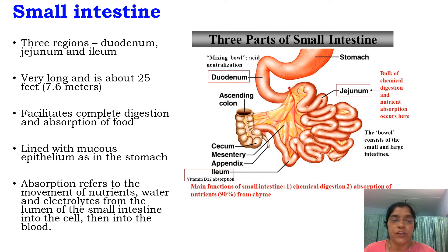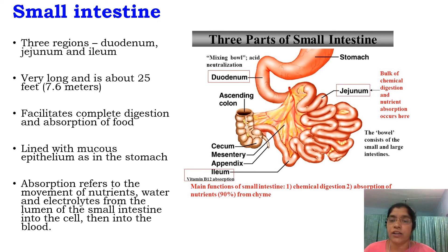It is lined with mucus epithelium. Absorption refers to the movement of nutrients, water and electrolytes from the lumen of the small intestine into the cell and then into the blood. Here in the intestine, the main process of mixing and utilization takes place.